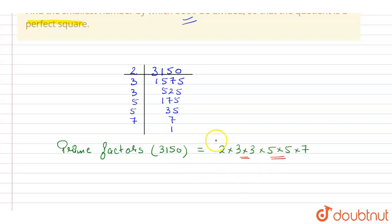Now we see that 3 is in a pair and 5 is also in a pair, but 2 and 7 are unpaired. So if we divide 3150 by 14, that is 2 into 7, then we will be getting it as a perfect square. So the lowest number by which 3150 should be divided is 14 to get a perfect square.